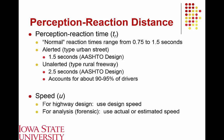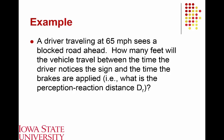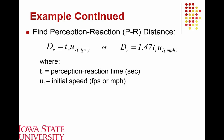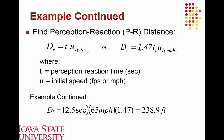As a quick example, assume a driver traveling at 65 mph sees a blocked road ahead. We want to know how many feet the vehicle travels between when the driver notices the blockage and when the brakes are applied — that is, the perception-reaction distance D_r. The formula is simply reaction time multiplied by speed in feet per second: D_r = T_r × V, where speed in mph is converted by multiplying by 1.47 (which equals 5280 divided by 3600). For our problem, the reaction distance at 65 mph is approximately 239 feet.